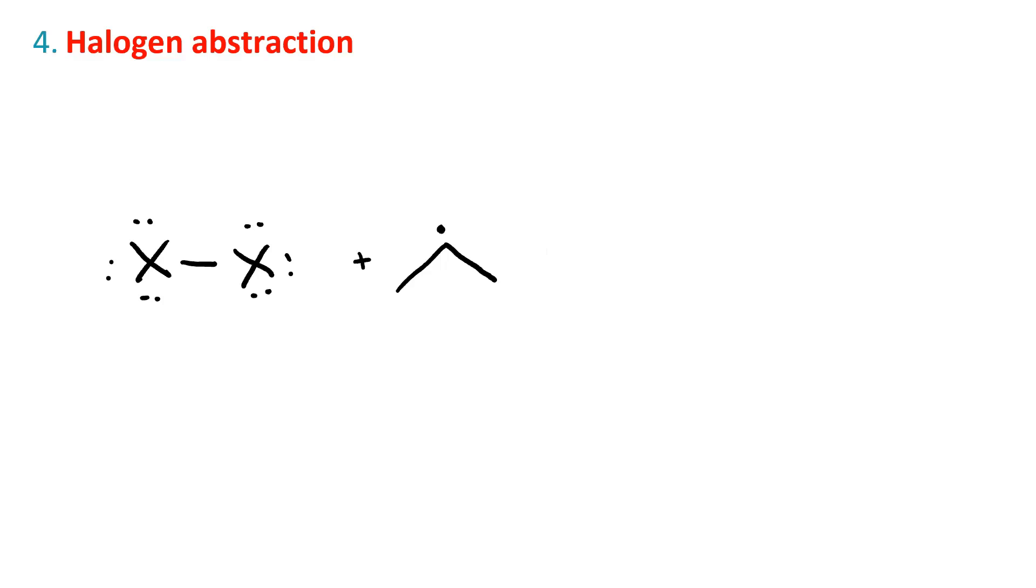In halogen abstraction, a bond to a halogen, now it doesn't necessarily have to be a halogen-halogen bond, but that's what I've drawn here with the X-X bond, is going to split. One of its electrons will couple with a radical electron. That's going to form a new C-X sigma bond. The other electron involved in the original bond becomes the new radical.